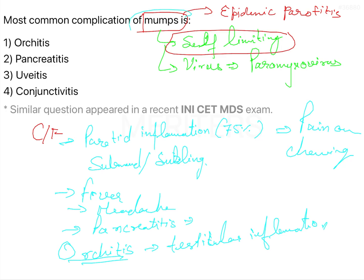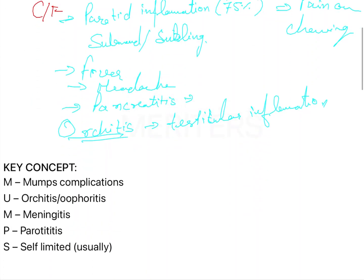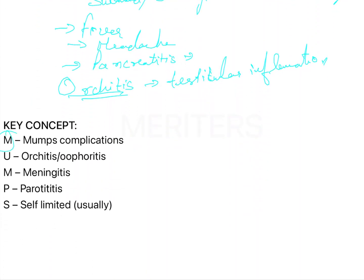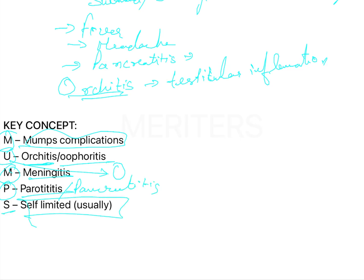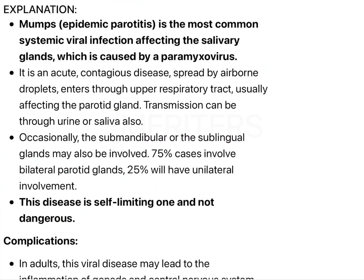To remember the complications of mumps, use the mnemonic MUMPS: M is for mumps complication, U stands for orchitis and oophoritis, M is for meningitis, P is for parotitis and pancreatitis, and S stands for the self-limiting nature of the disease.